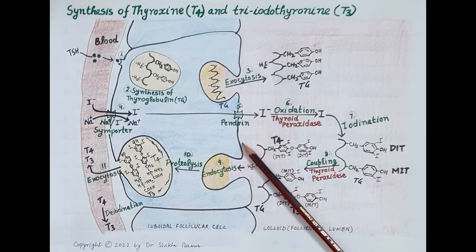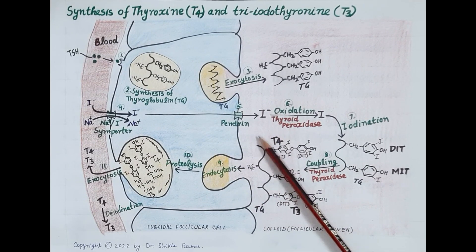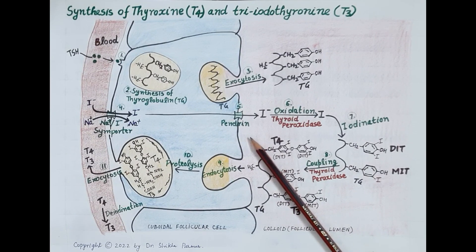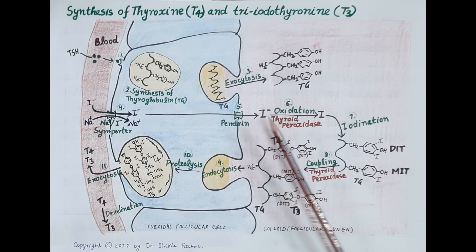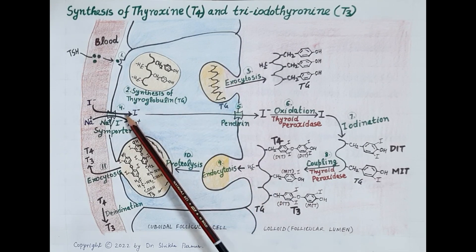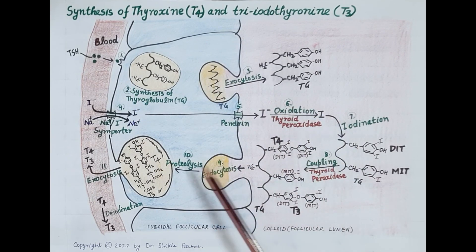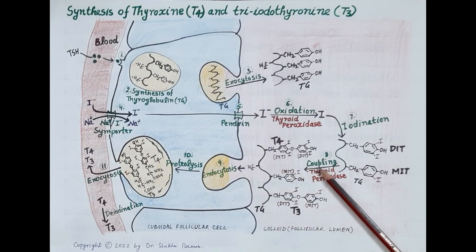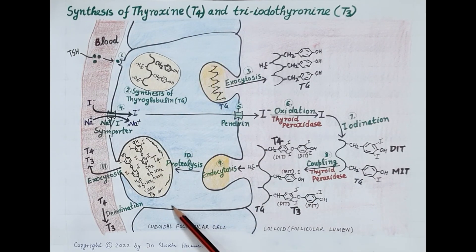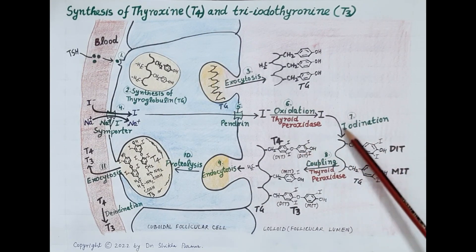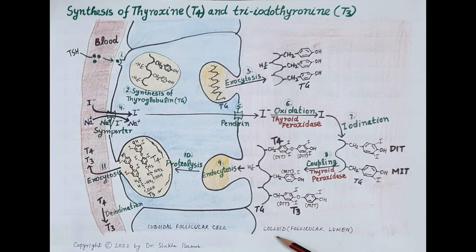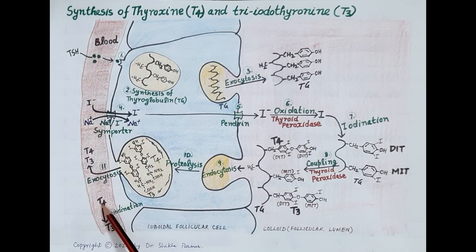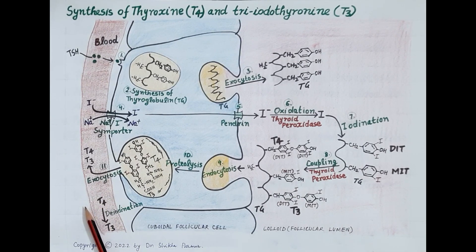Now look at this chart showing the synthesis of T3 and T4, represented in 11 steps. This is the zoomed view of a thyroid follicle, showing the cuboidal follicular cells, the central follicular lumen containing colloid, one complete follicular cell, and the blood capillary. Let's go through the steps involved in the synthesis of T3 and T4 one by one.